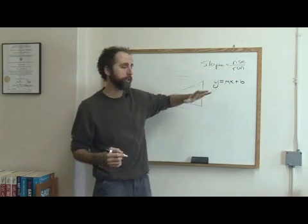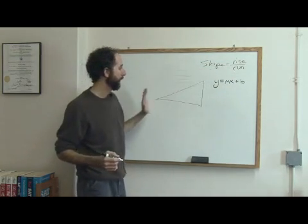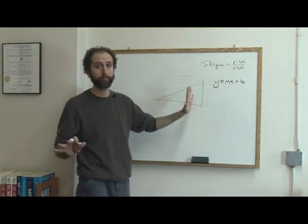So it's the same slope, and slope is rise over run. It just says how much did it go up, and how much did it go over. That's all. It's as simple as that.